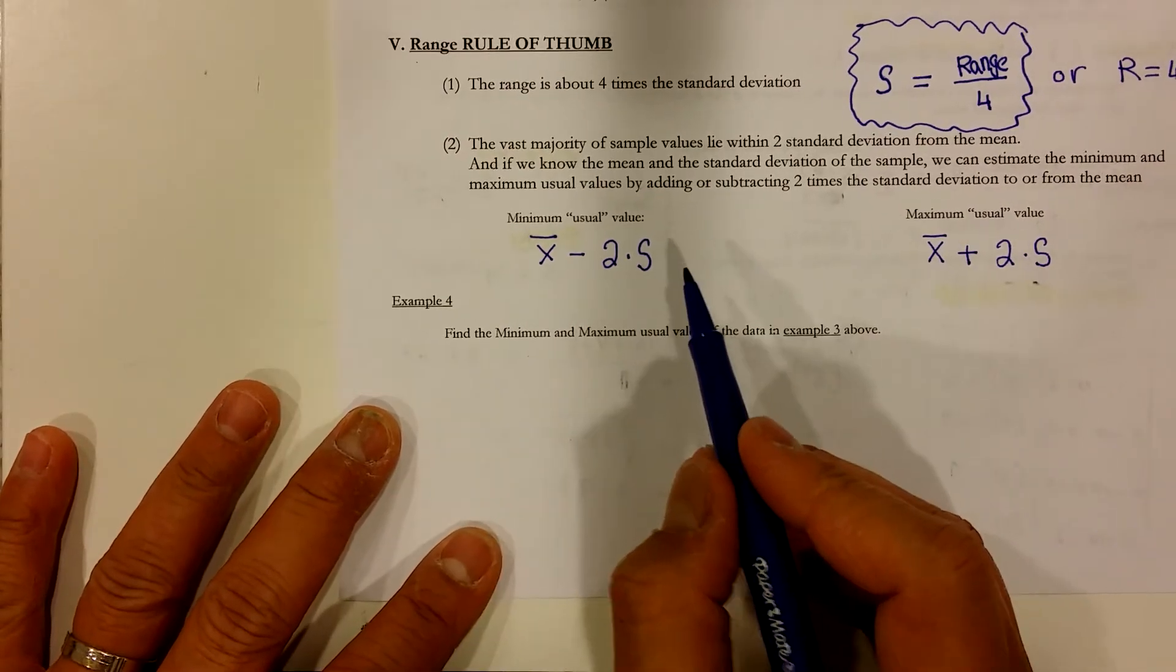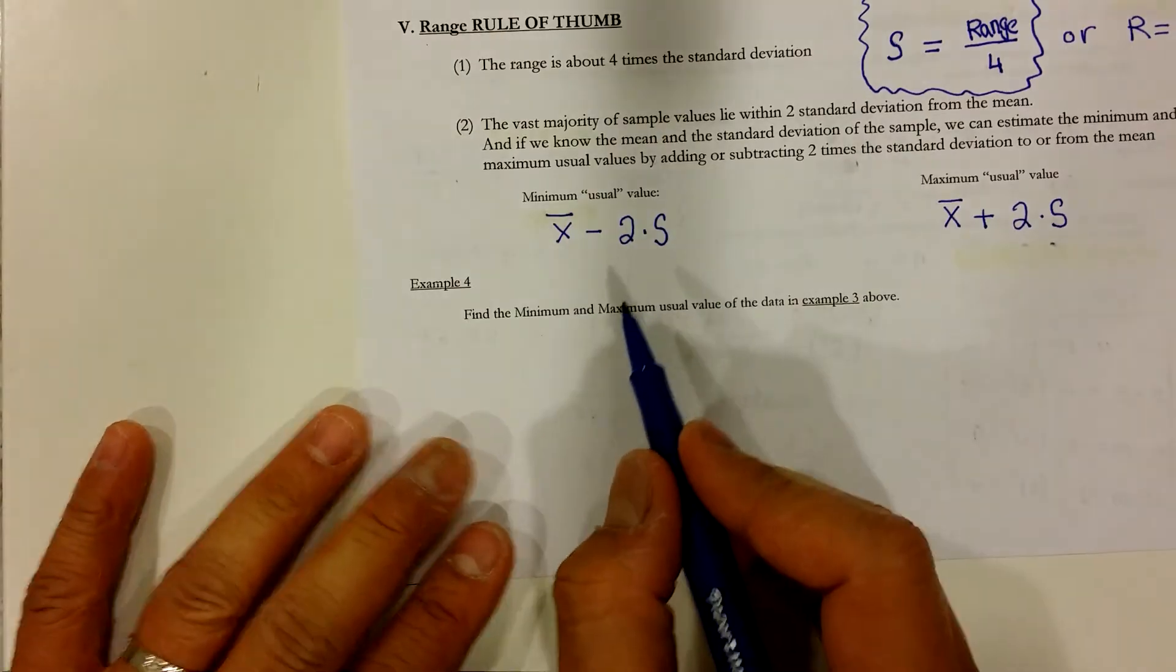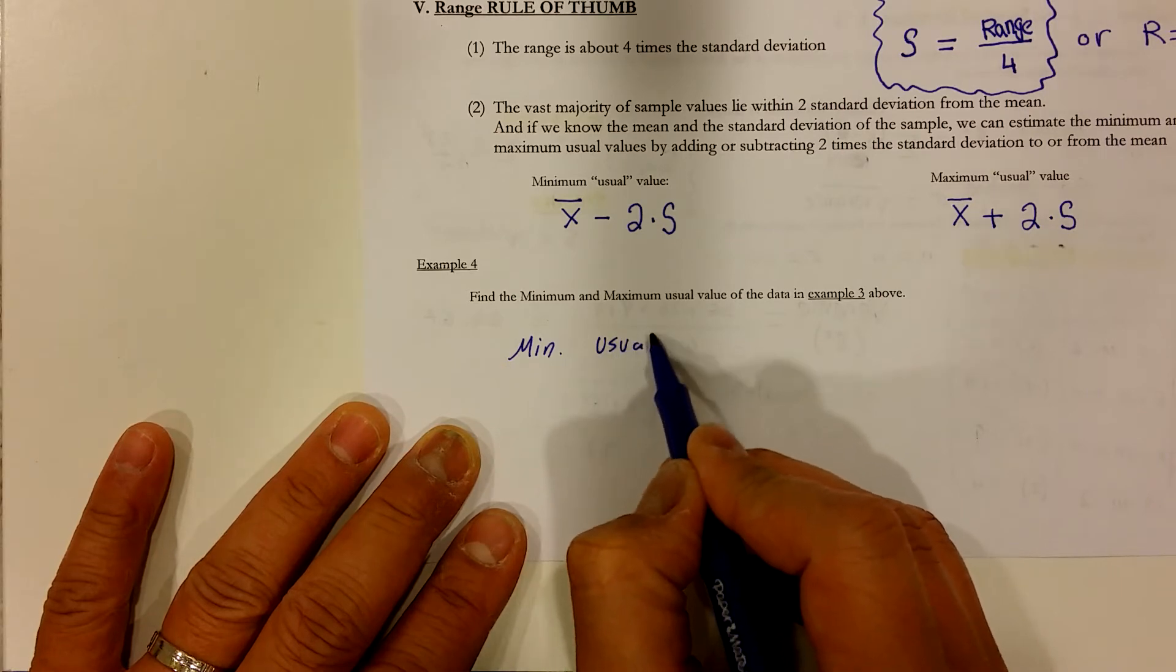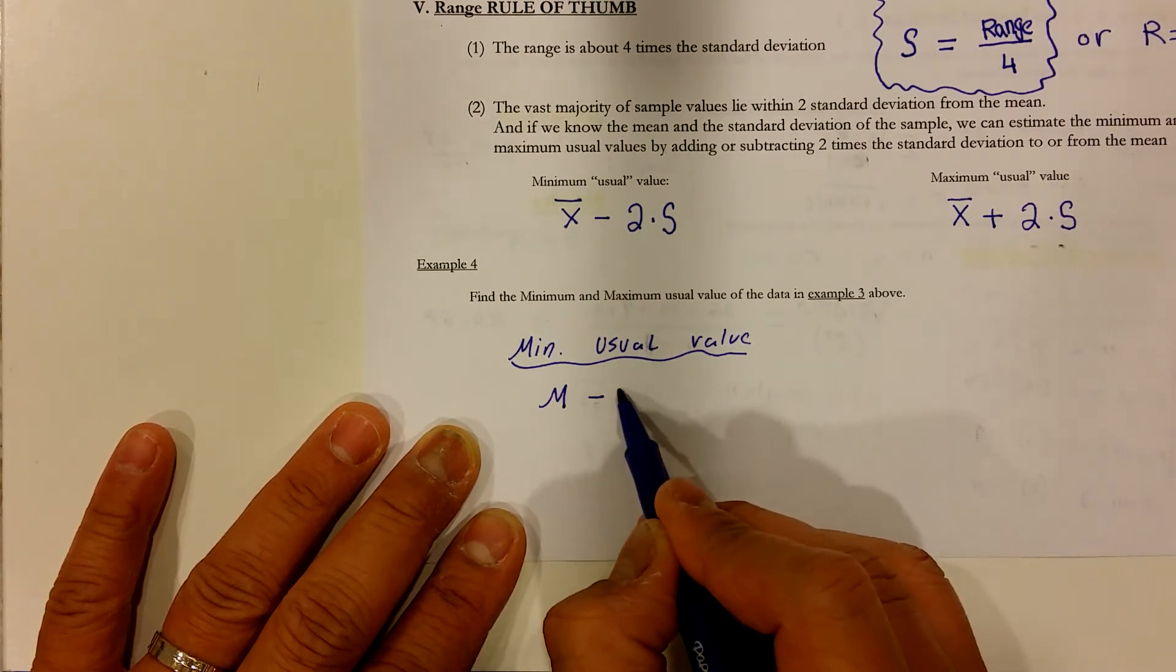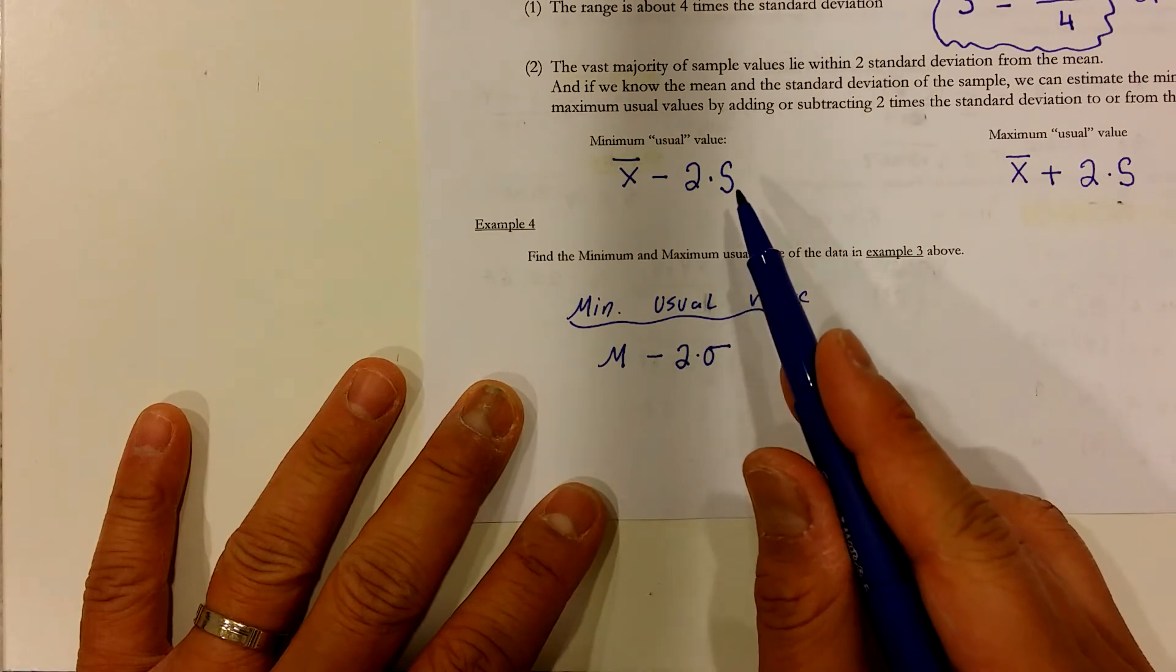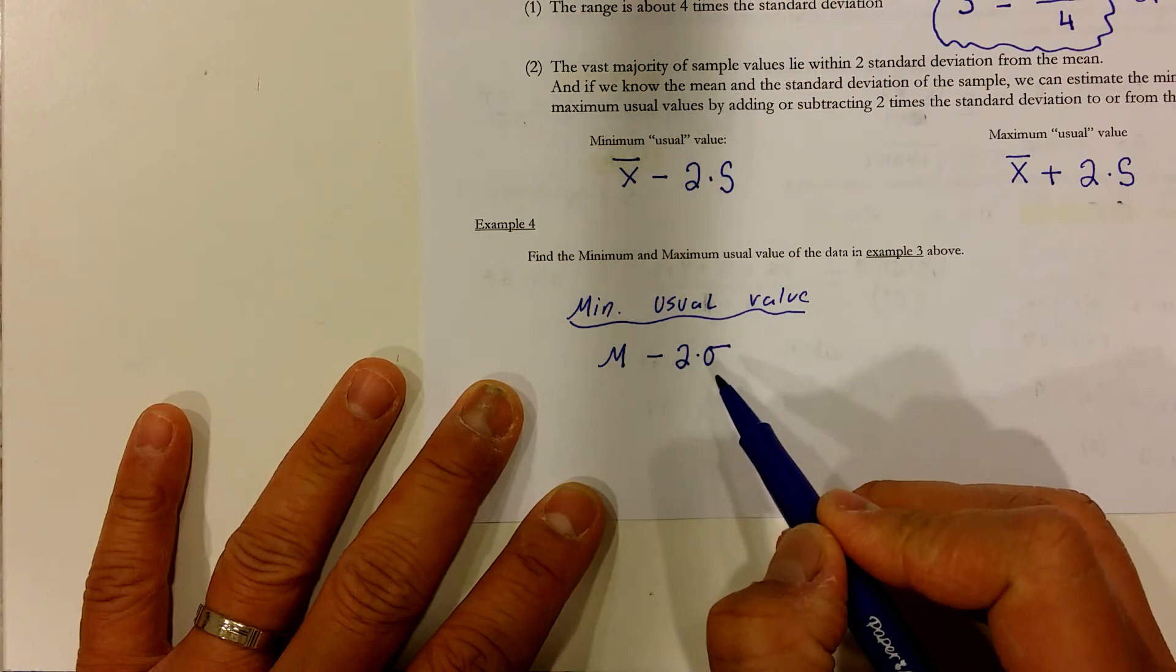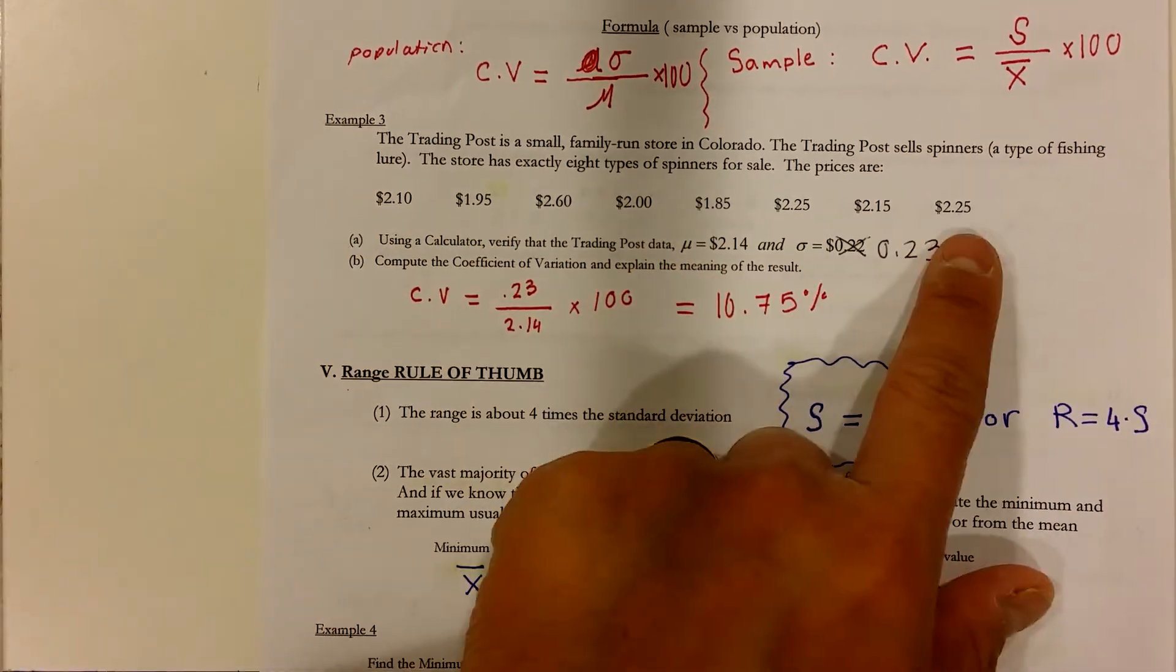and by the way, because this was a population mean, we used that symbol for our population average. So, the minimum usual value can be found by taking the population mean minus twice the population standard deviation. Remember that sigma and s are like the same. They both stand for the standard deviation. This is the standard deviation for your sample and this means the standard deviation for your population.